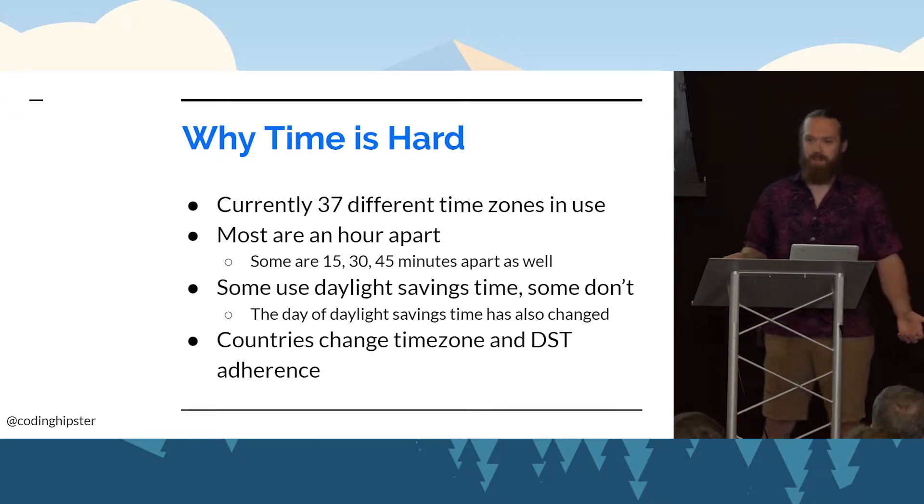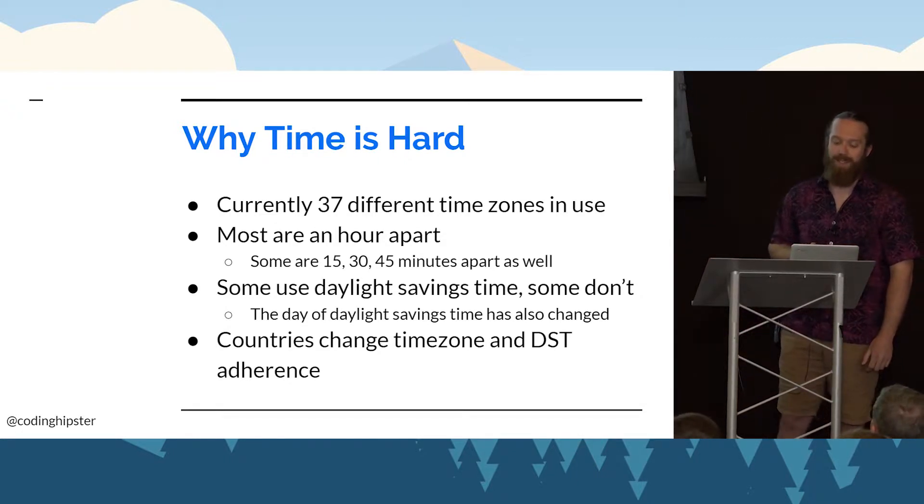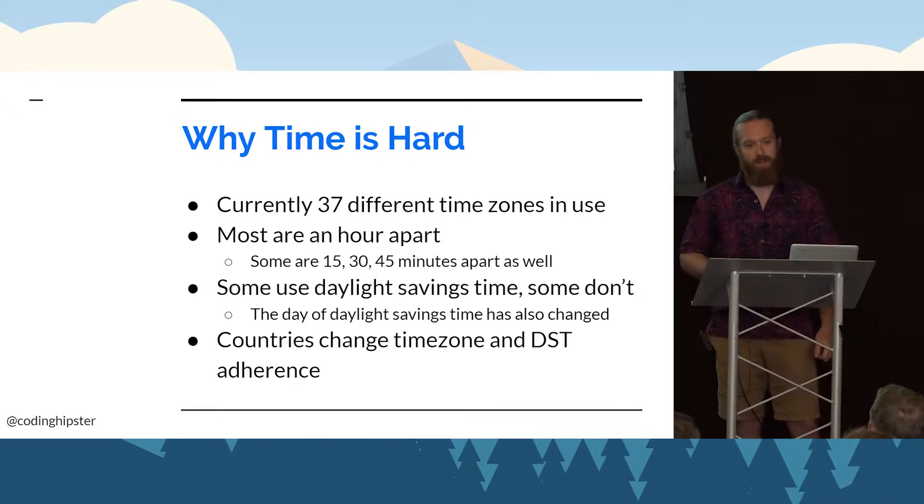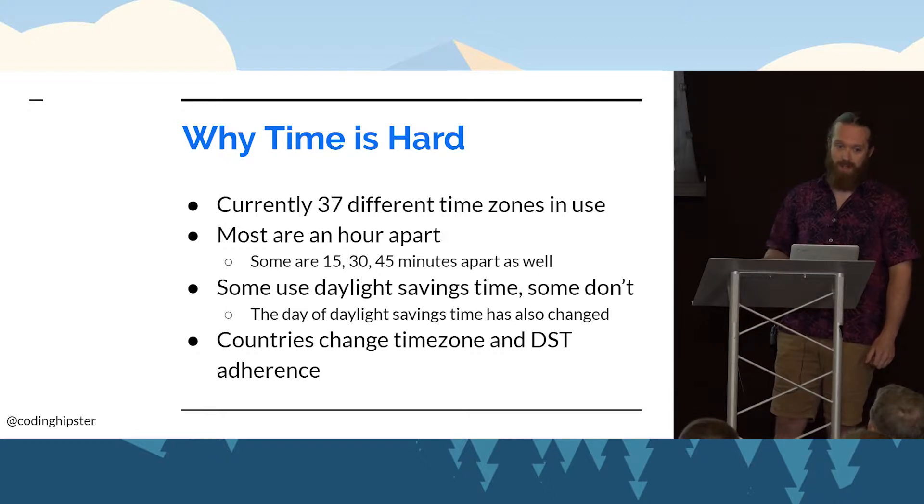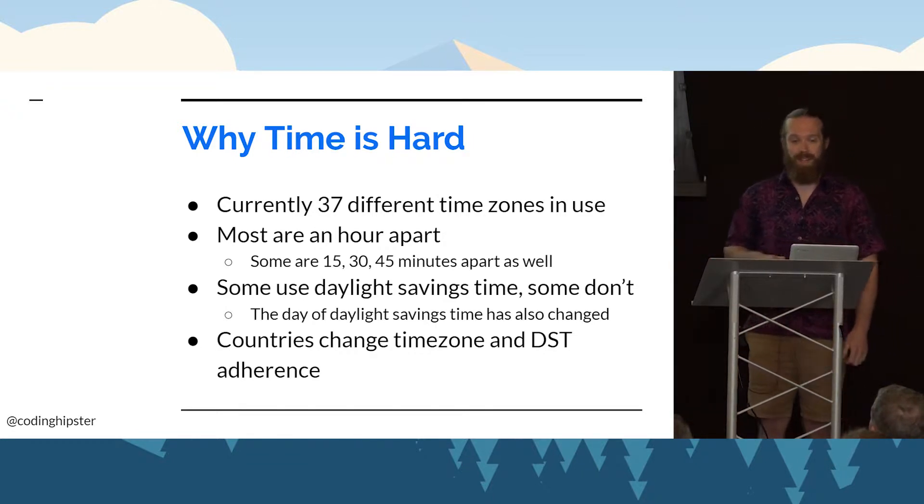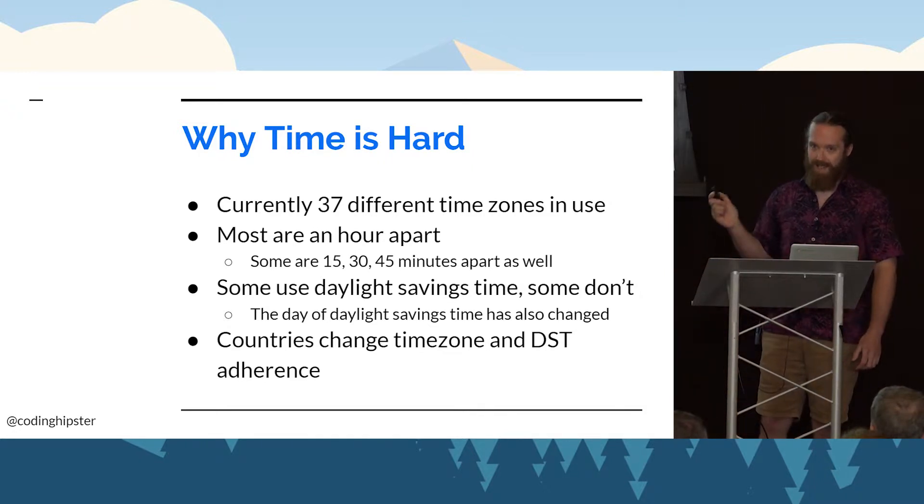So why is time hard? For starters, there are 37 different active time zones in the world. Now, there's only 24 hours around the world, so that's a little bit of a head-scratcher. There are time zones that sit in 15, 30, and 45-minute intervals. You also have some areas that respect daylight savings time, some that don't. You have areas inside individual states like the Navajo Nation that respects daylight savings time while the state they're in does not. Another interesting thing is over the last 75 years, there have been eight different countries that have changed their time zone at some point or another. There are actually nine, the ninth one being North Korea. They changed their time zone in 2015, but they decided against it and then switched back three years later.